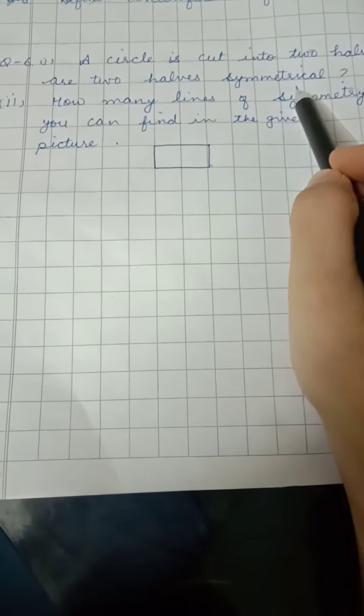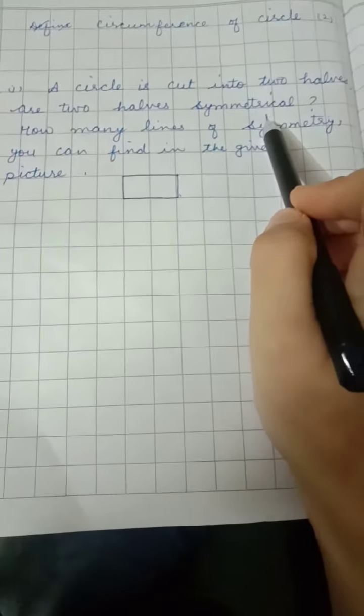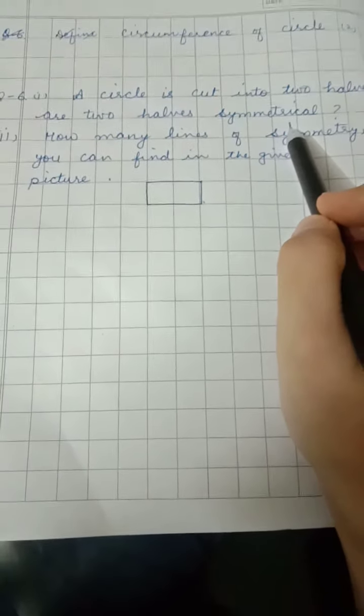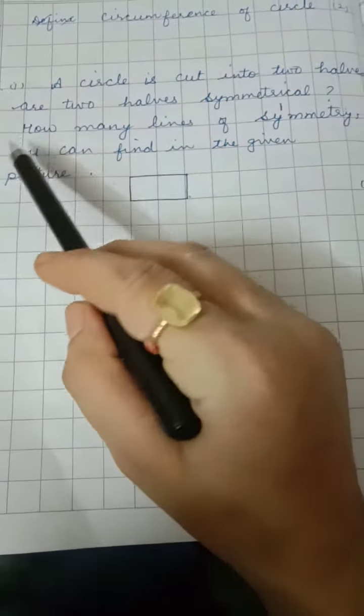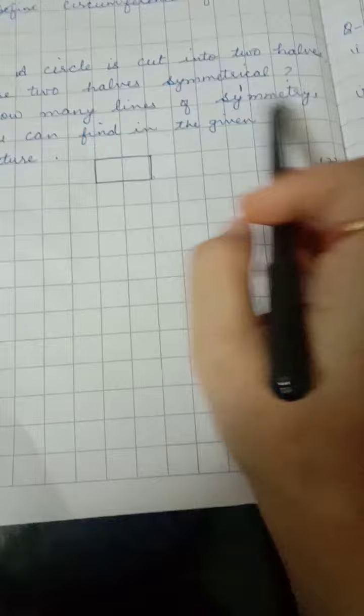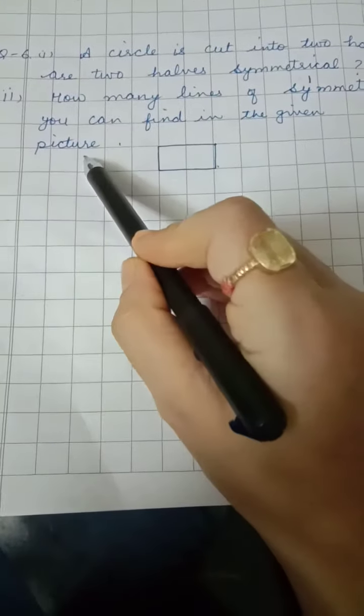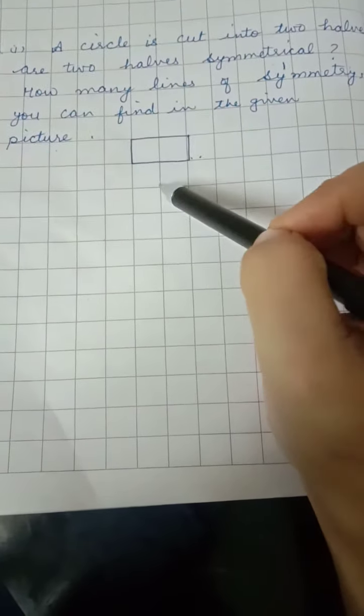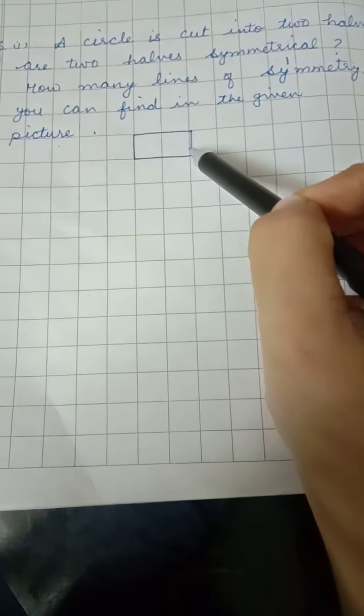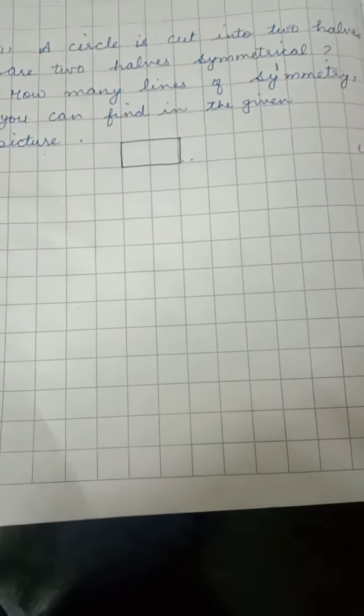Write yes or no. Draw a circle and cut it into two halves and then write yes or no. Second part: How many lines of symmetry can you find in the given picture? You have to write the number of lines of symmetry.